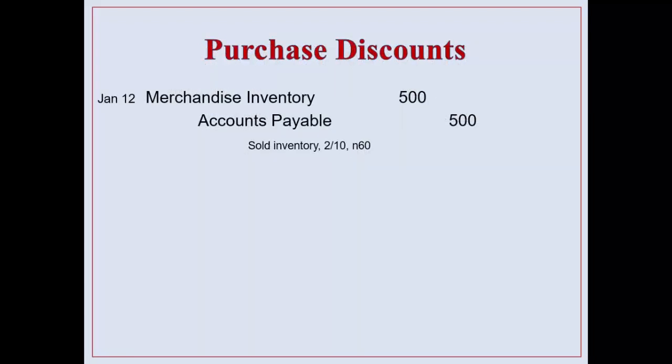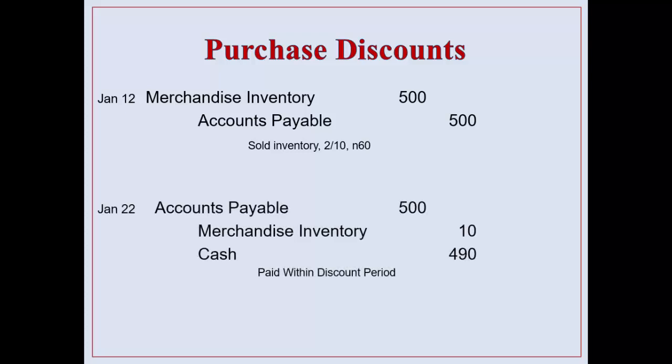So with purchase discounts: merchandise inventory and accounts payable — this is sold inventory. January 22nd they paid within the discount period. I'm disregarding cost of goods sold and merchandise inventory just for demonstration purposes only. We're just going to look at the revenue sides of the transaction, so don't worry about whether it's perpetual or a periodic inventory system.